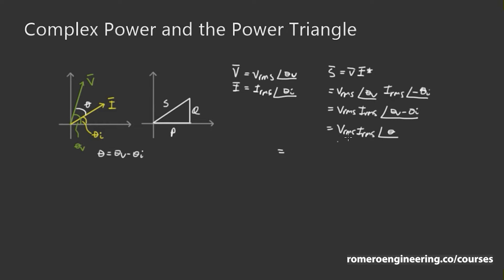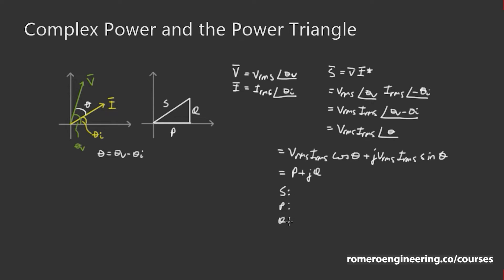If we express the apparent power in rectangular form, then S phasor equals V_RMS times I_RMS times the cosine of theta, plus j times V_RMS times I_RMS times the sine of theta. From here we can define S phasor as equal to P plus jQ, where S is the apparent power, P is the real power, and Q is the reactive power.